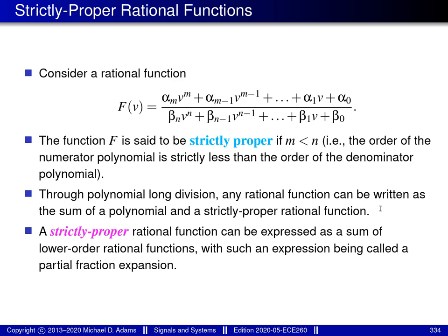Consider a rational function f as given by this particular formula here, where v is a complex variable, the alpha k and beta k are complex constants, and m and n are non-negative integers. The quantities m and n correspond to the degrees of the numerator and denominator polynomials respectively. As a matter of terminology, the function f is said to be strictly proper if m is less than n — in other words, the degree of the numerator polynomial is strictly less than the degree of the denominator polynomial.